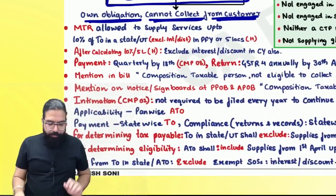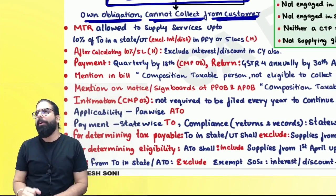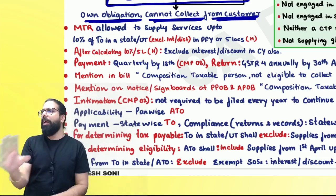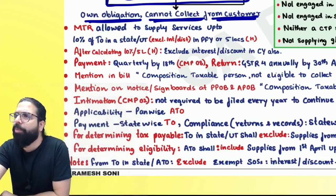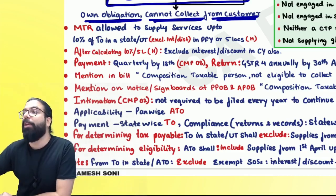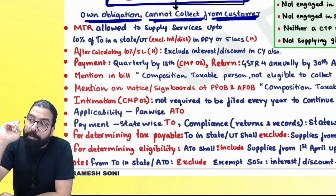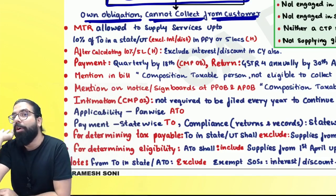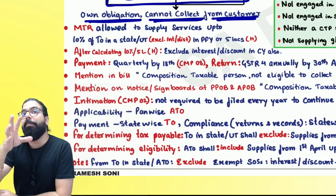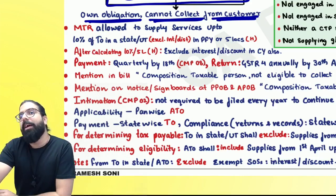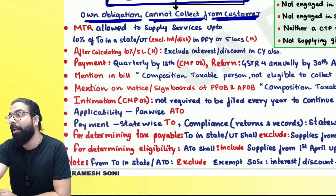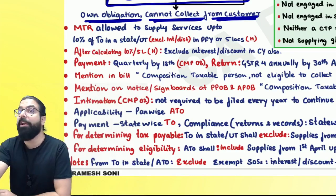The government said: if you are checking eligibility, please exclude interest or discount income. Even if you have interest income, the government will consider you as a goods supplier only and will not say you are ineligible — because service providers were made ineligible. Giving money and receiving interest is an exempt supply of service, but still you will be eligible for Composition Scheme. Now, people also said: 'Sir, I am a manufacturer of televisions, and sometimes people bring TVs for repair — so I also provide a little service.' The government initially allowed only interest income as the exempt service exception.